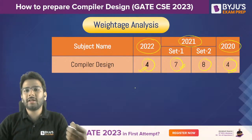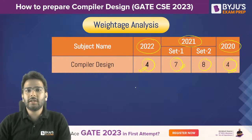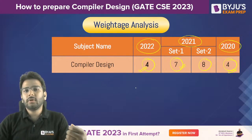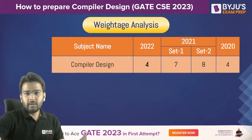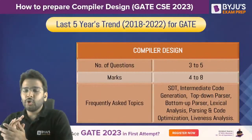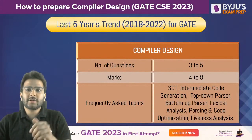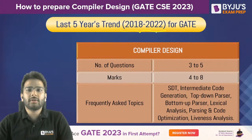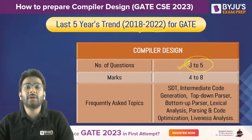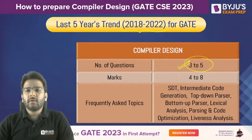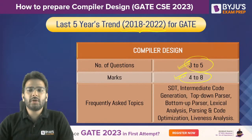This subject is very important, and even one mark is very important in your GATE exam. If we see the last five years trend from 2018 till 2022, the number of questions generally asked is three to five. Even in GATE 2022, they asked only three questions and one is a two-mark question. The weightage is going to be four to eight marks.